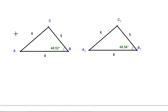Okay, we have triangle ABC and triangle A1B1C1. Right now, these triangles are congruent. We have a side 8, side 8, side 6, side 6, side 5, side 5, and an angle that's 48.52 degrees, 48.52 degrees.